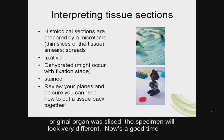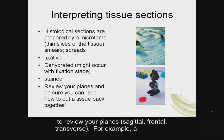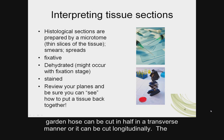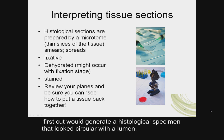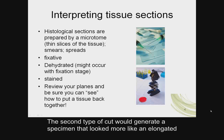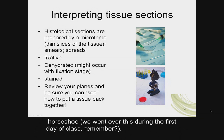Depending on how the original organ was sliced, the specimen will look very different. Now is a good time to review your planes — sagittal, frontal, transverse. For example, a garden hose can be cut in half in a transverse manner or cut longitudinally. The first cut would generate a histological specimen that looks circular with a lumen. The second type of cut would generate a specimen that looks more like an elongated horseshoe.